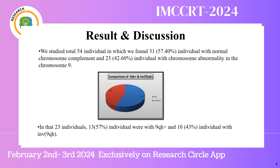Results and discussion: We studied a total of 54 individuals, of which 31 individuals had a normal chromosome complement and 23 individuals had chromosome abnormality in Chromosome 9. Among them, 23 individuals had 9 QH plus and 10 individuals had inversion 9.